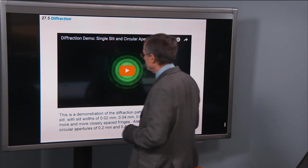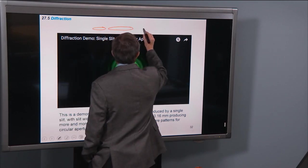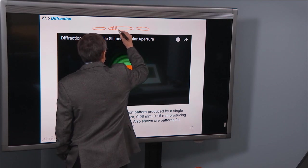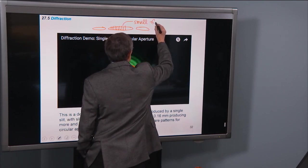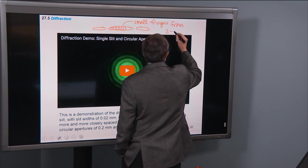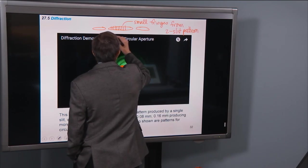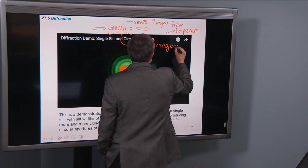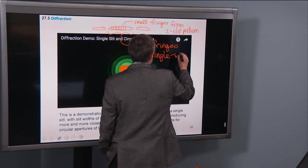And one thing we did see in this particular demo was that we saw the diffraction pattern that was evident in the first demo that we showed a couple of sections ago. Remember in the demo we saw something like this, a bright fringe in the middle, and then little subdivisions. And so these small fringes were from the two-slit pattern. And these larger fringes were from the single slit pattern.